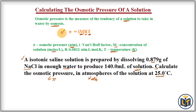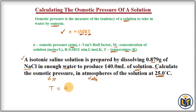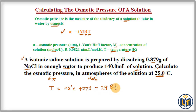Before we apply the formula, we need to convert units. Temperature must be in Kelvin, but the problem gives it in degrees Celsius. So we convert: T = 25°C + 273 = 298 K.